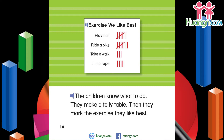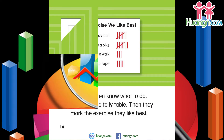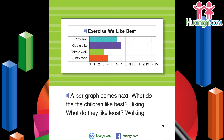Exercise we like best — Play ball: six. Ride a bike: seven. Take a walk: three. Jump rope: four. A bar graph comes next. What do the children like best? Biking. What do they like least? Walking.